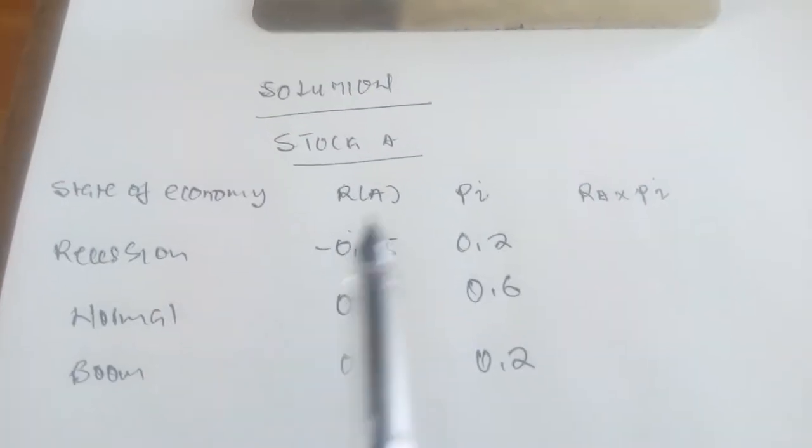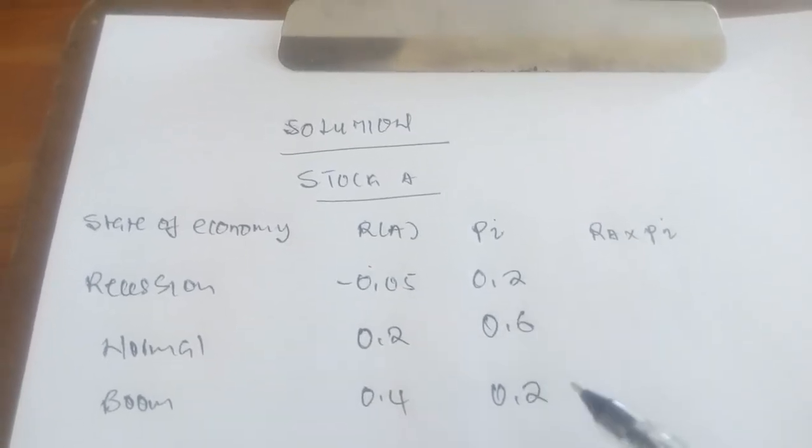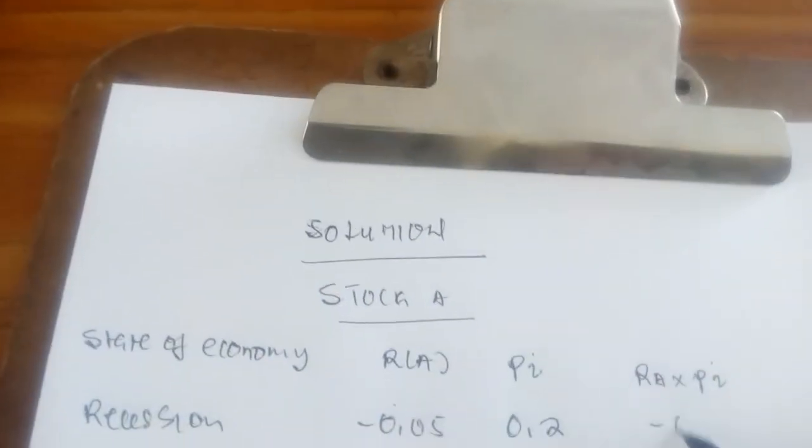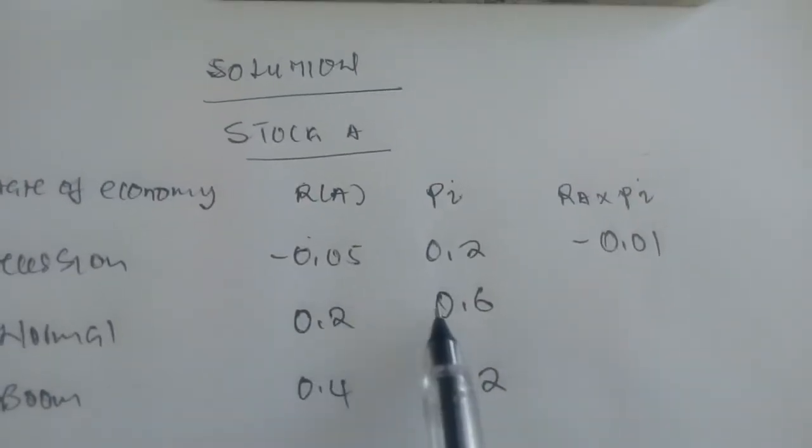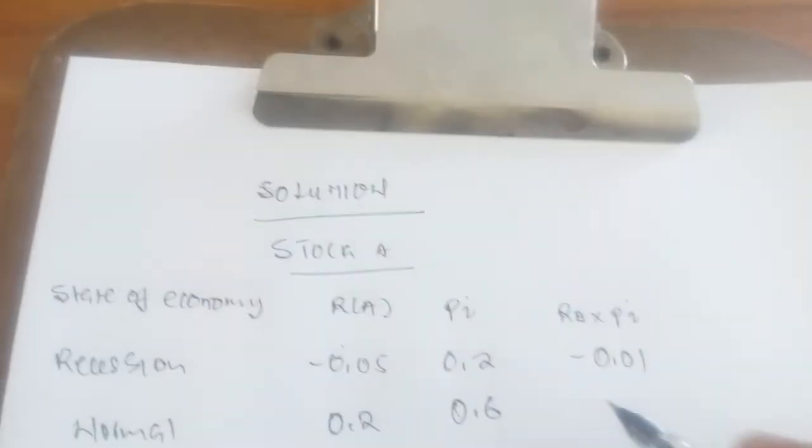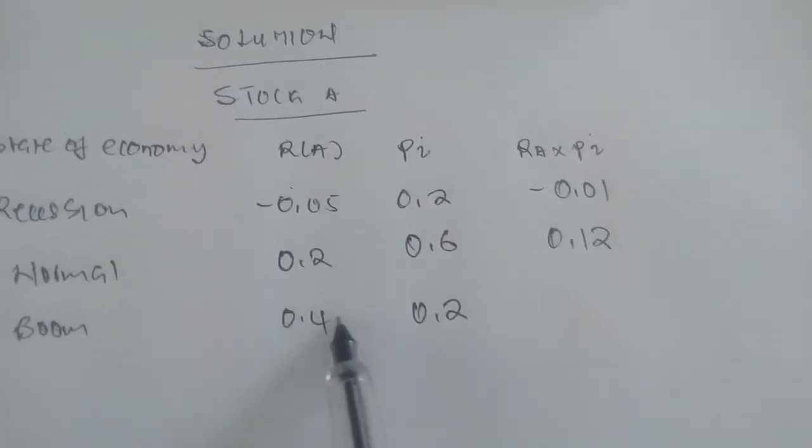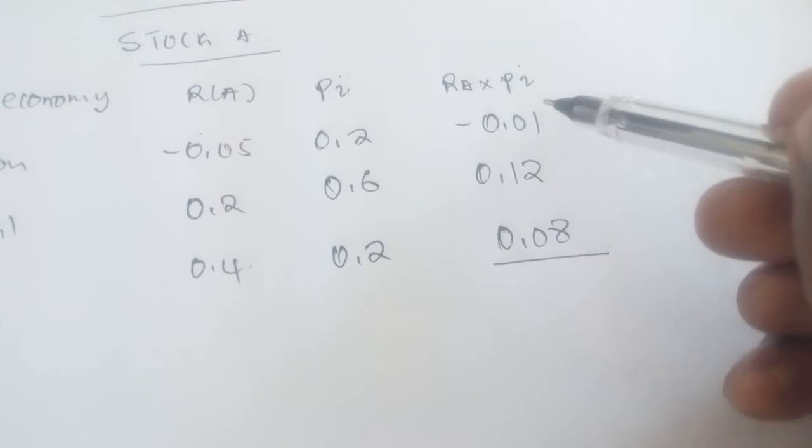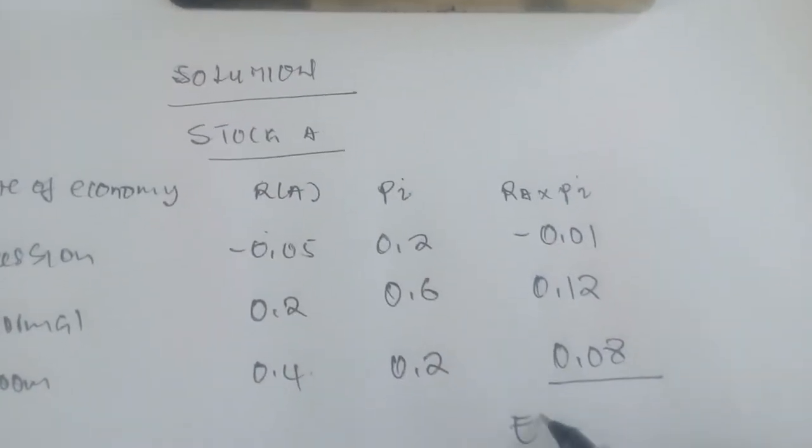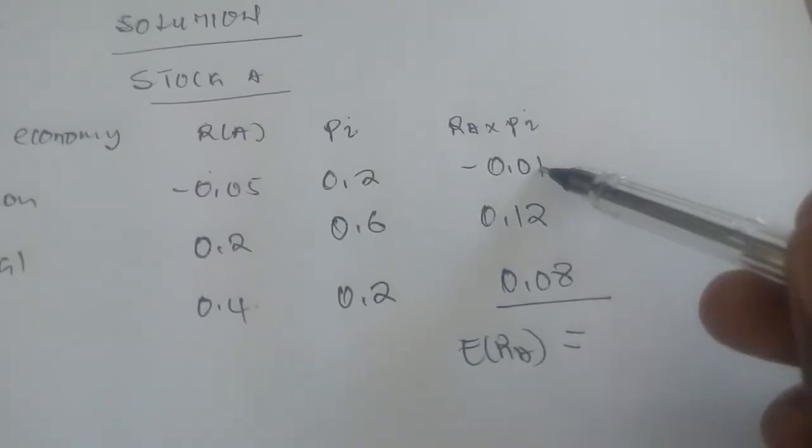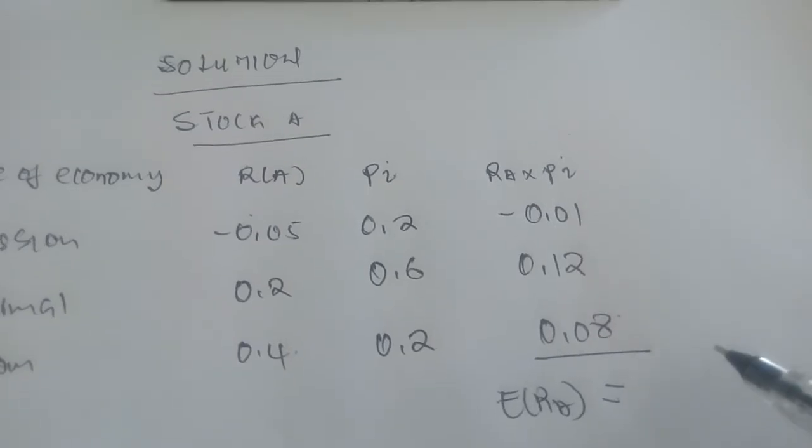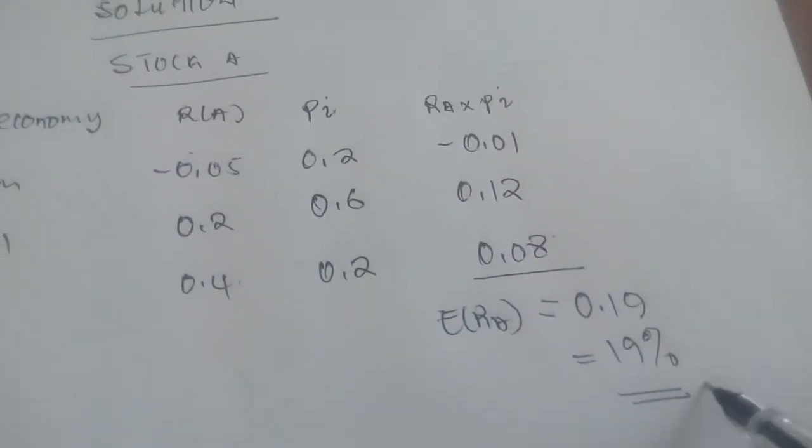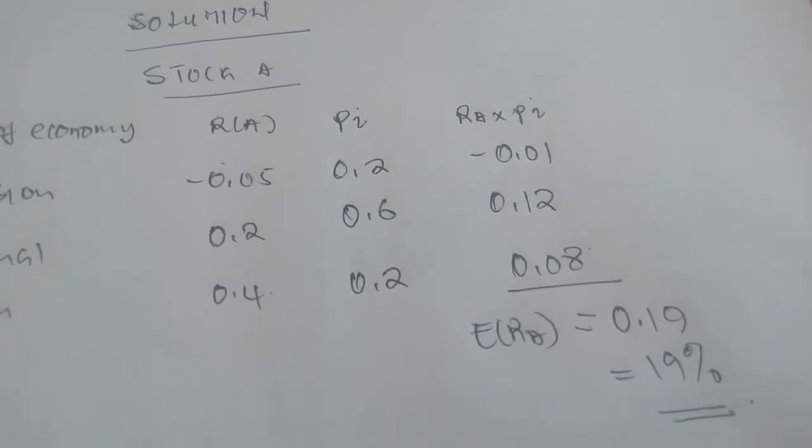Straightforward here. This multiplied by that, we get negative 0.01. Then we have 0.2 multiplied by 0.6, we get 0.12. Then we have 0.4 multiplied by 0.2, we get 0.08. When we sum these numbers, they should give us the expected rate of return on stock A. Adding these numbers gives us 0.19, which is the same as 19% in return. That is how we find the expected rate of return for stock A.